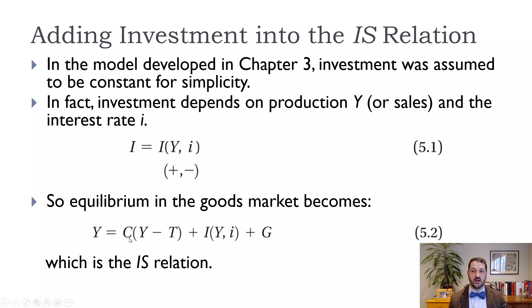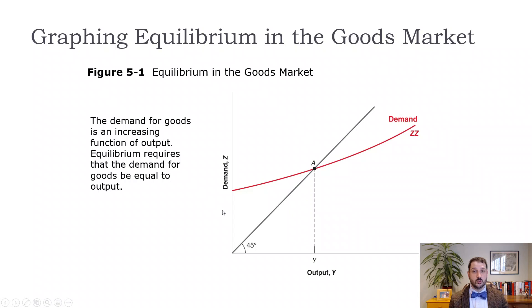So we have this new investment function: investment depends on GDP with a positive sign — higher GDP means higher investment — and on the interest rate with a negative sign — lower interest rate means higher investment. We can now put that into our equation: Y = C(Y - T) + I(Y, i) + G. That's our new IS relation, and government spending G is still assumed exogenous because it takes place through the political process.